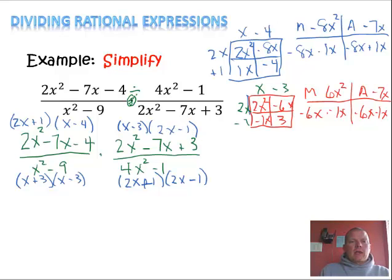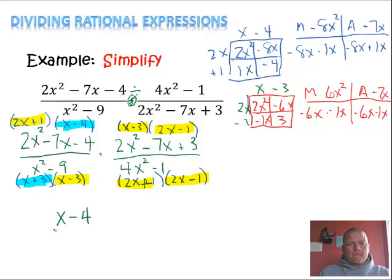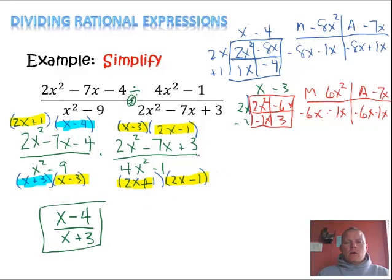Now let's look and start canceling. Whatever's on the top and the bottom might cancel, so that one will cancel with that one. X minus 4 doesn't have anything to cancel with. X minus 3 does, and 2x minus 1 does. So all I'm left with is this factor and that factor. So I'll rewrite my answer now as x minus 4 over x plus 3, and that's our simplified version of this problem.